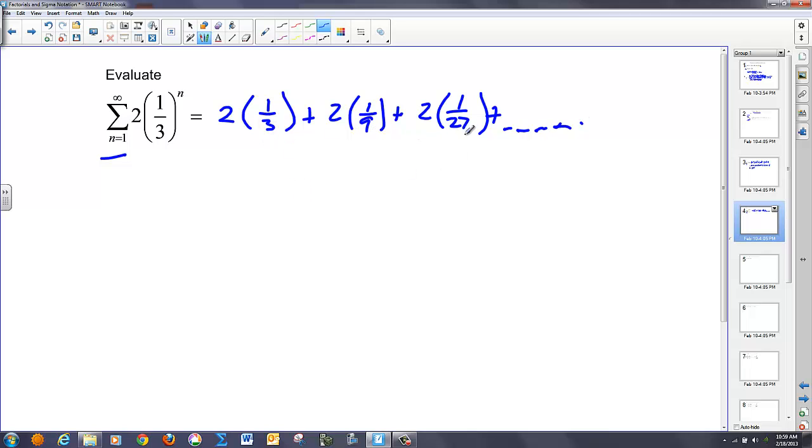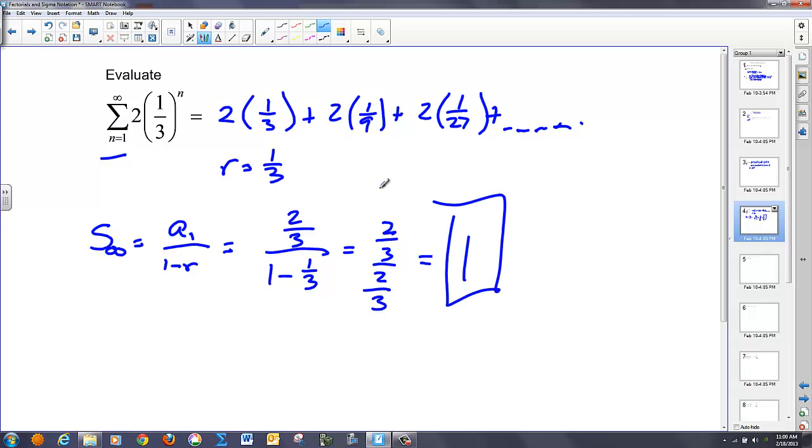And we can start to see that as I go through, I have a ratio, in this case, of one-third from term to term. Which means this is an infinite geometric, and my ratio is less than one. So in this case, I need my infinite geometric series, which says take a1, put it over one minus r, and get your sum. So my first term is two-thirds over one minus my ratio, which is one-third, thus giving me two-thirds over two-thirds, or one. And that's the sum of that series.